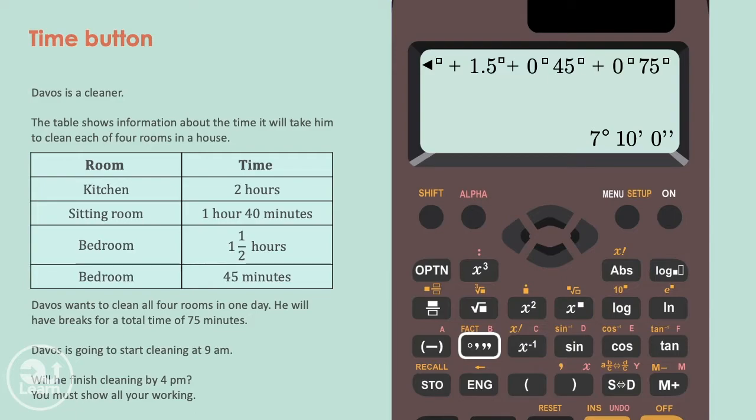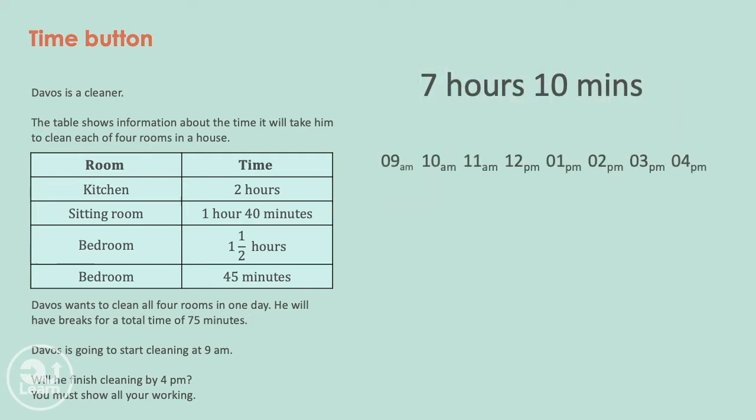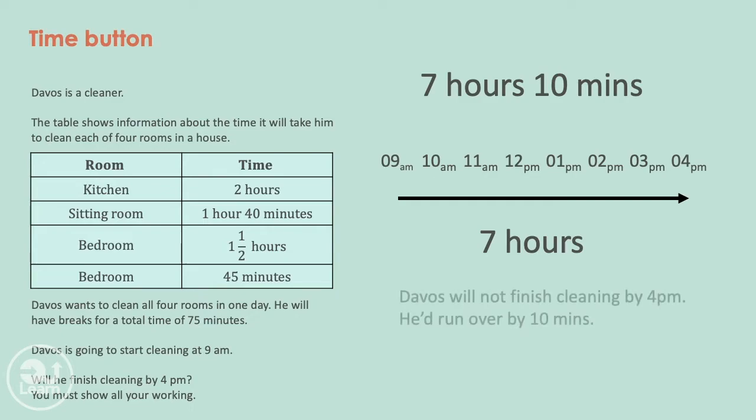Now we find the difference between 9 am and 4 pm and compare the times. The difference between 9 am and 4 pm is 7 hours. 7 hours compared to 7 hours and 10 minutes means Davos will not finish cleaning by 4 pm. He'd run over by 10 minutes.